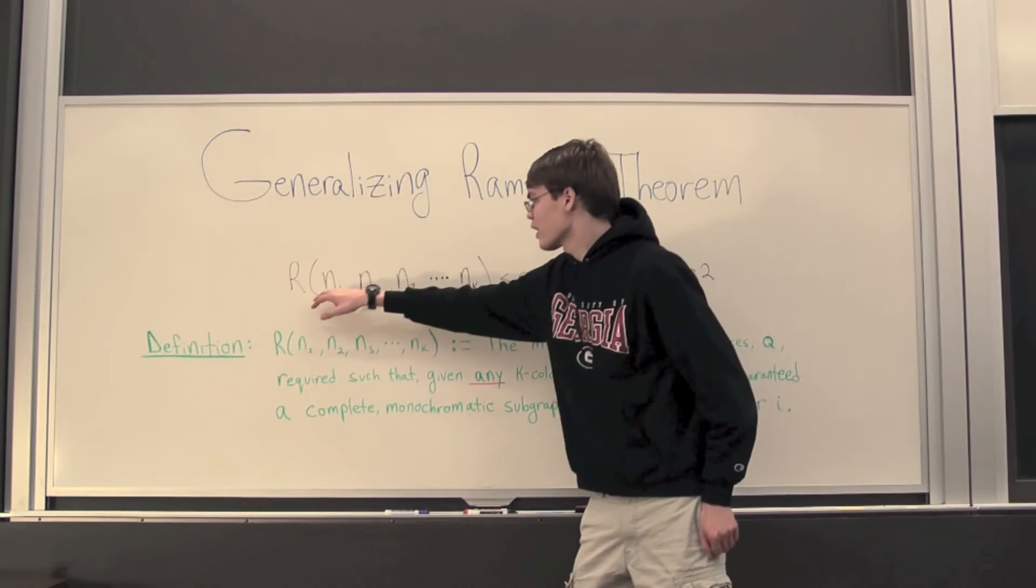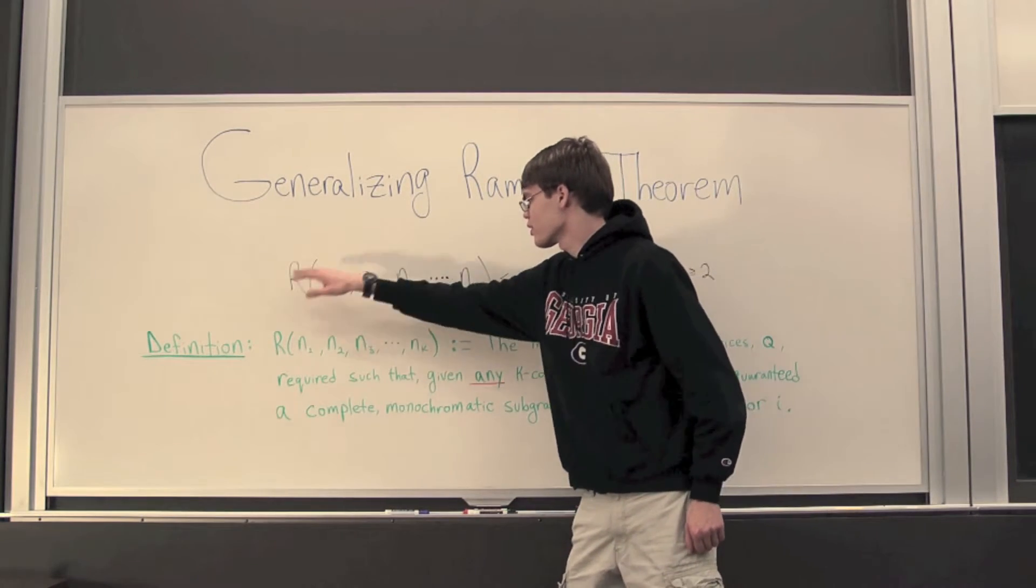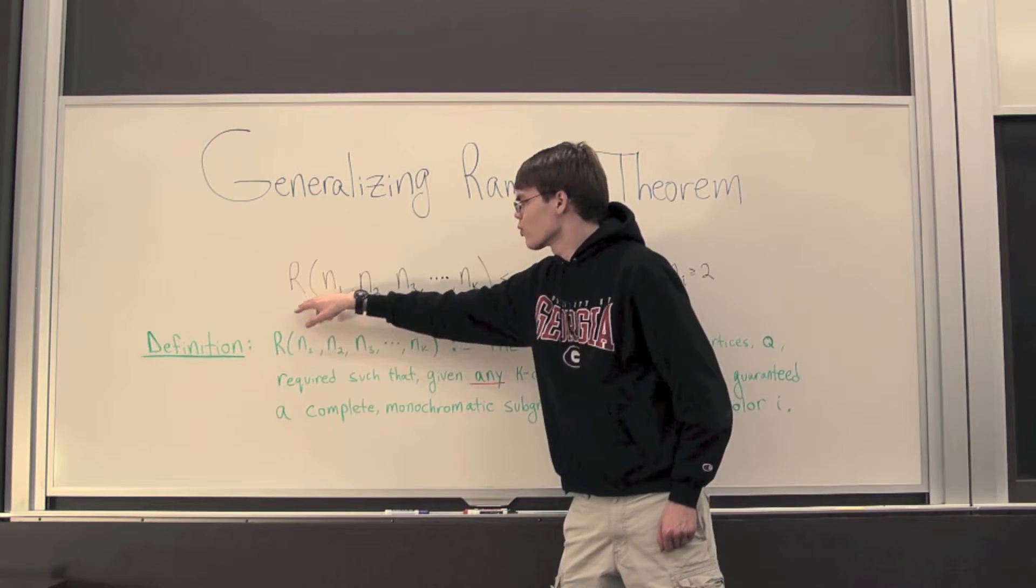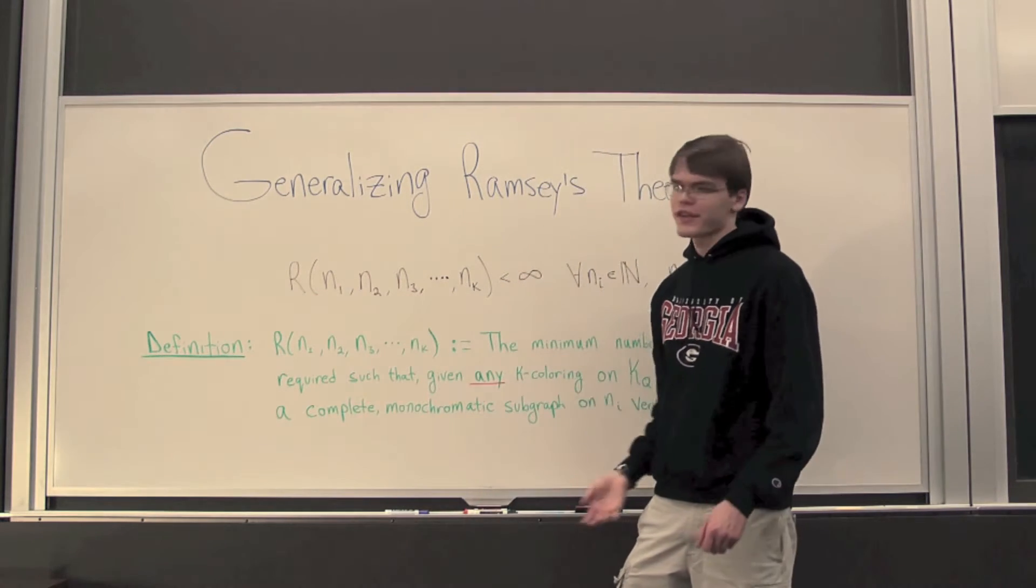Now, right off the bat, we've kind of introduced some new notation. Now, what does it mean to say, what is r(n₁, n₂, n₃, ..., nₖ)?